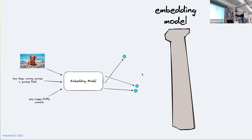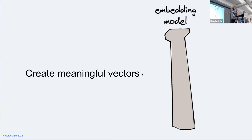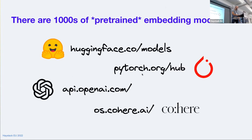All of that basically means the embedding model needs to create meaningful vectors. There are at least thousands of pre-trained embedding models — you have a ton of them on Hugging Face, PyTorch, OpenAI. You can find them anywhere. So why would we fine-tune anything when we have all of these models?